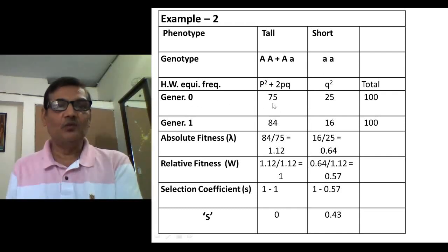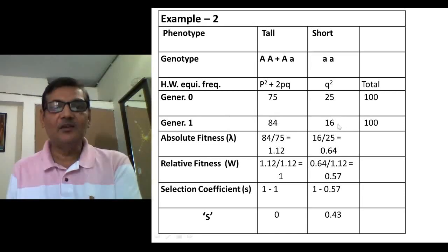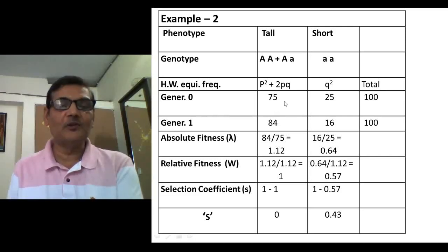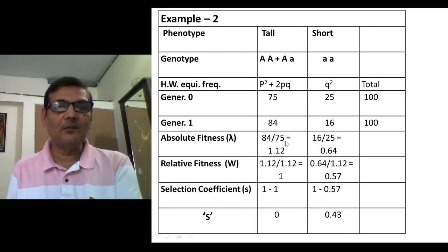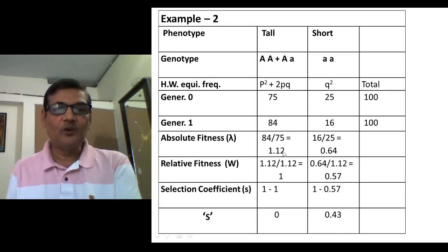In generation 0, 75 plants were tall and 25 were short, totaling 100. In generation 1, 84 were tall and 16 were short, also totaling 100. Dividing next generation by previous: 84 divided by 75 gives 1.12, and 16 divided by 25 gives 0.64. These are the absolute fitness values (lambda): 1.12 for tall plants and 0.64 for short plants.